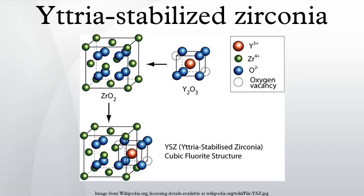The ionic conductivity of stabilized zirconias increases with increasing dopant concentration, then saturates, and then starts to decrease. The maximum ionic conductivity is obtained at a Y2O3 concentration of about 8%.